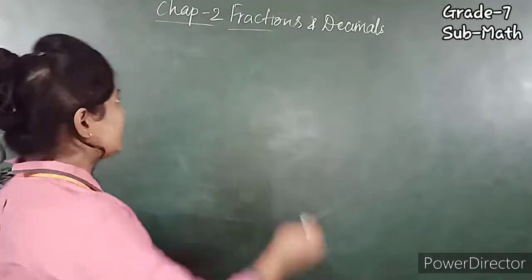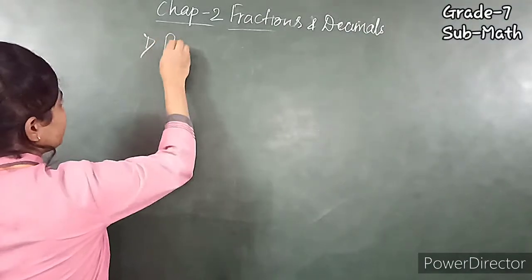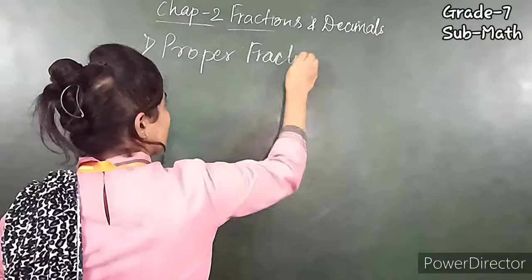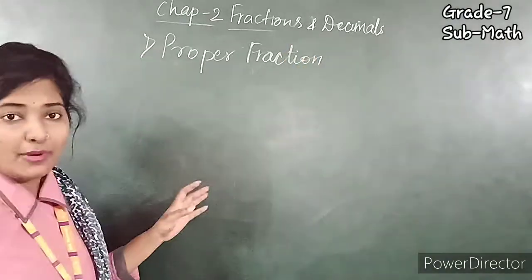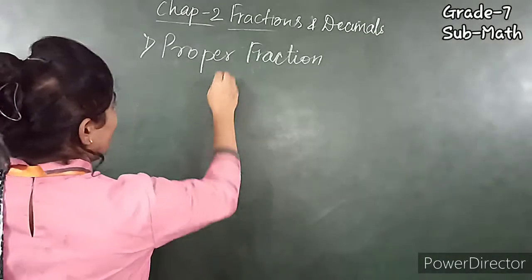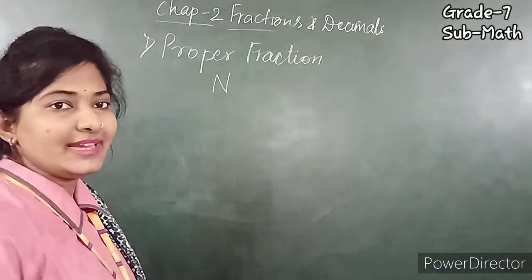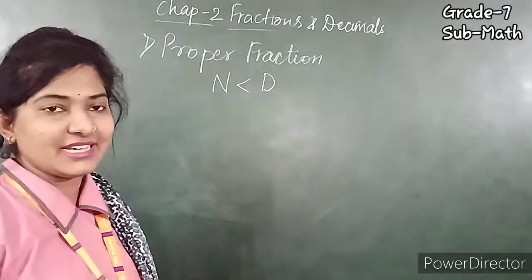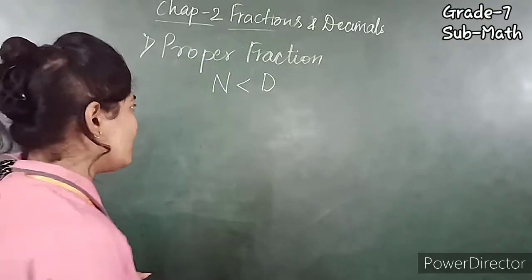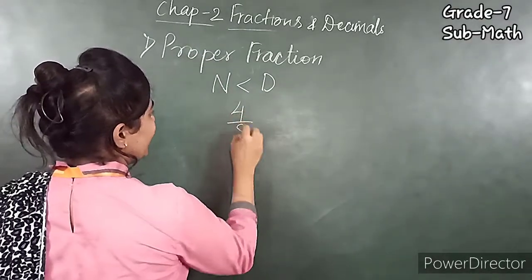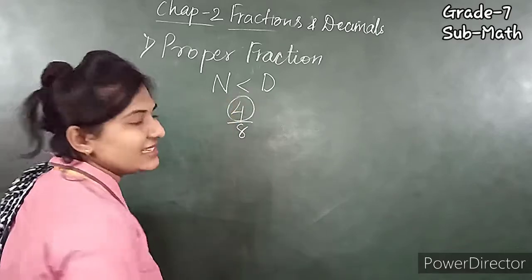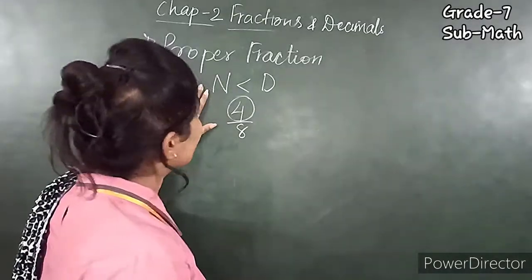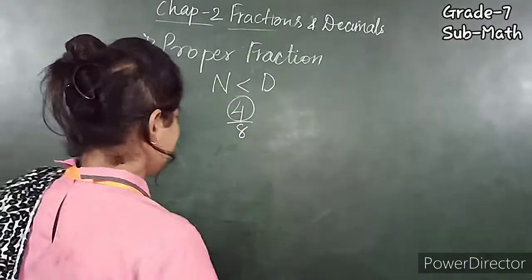What is a Proper Fraction? When the numerator is smaller than the denominator, it is called a Proper Fraction. For example, 4 upon 8 — here the numerator is smaller than the denominator, so it is known as a Proper Fraction.